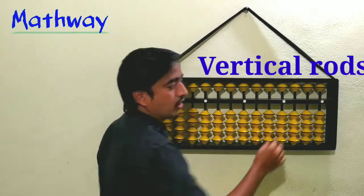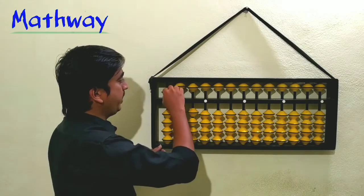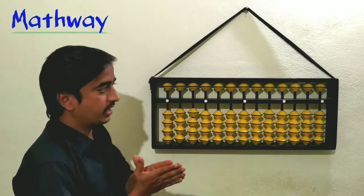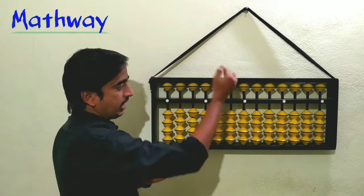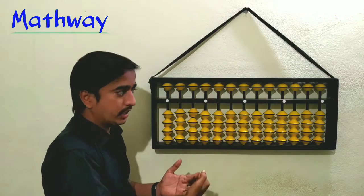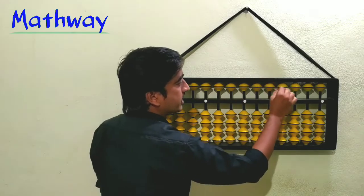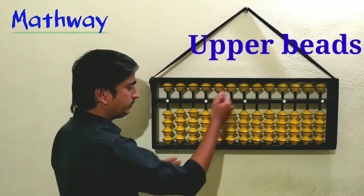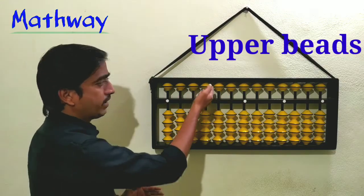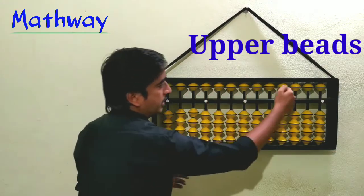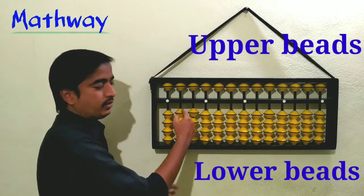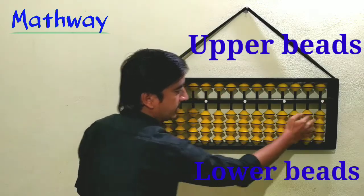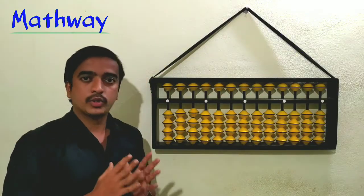The rods which are in the vertical direction are called vertical rods. If you look, there are some beads — yellow colored beads. There are two types: ones in the upper section and ones in the lower section. The beads on the upper side of the answer line are called upper beads, and the beads on the lower side of the answer line are called lower beads.